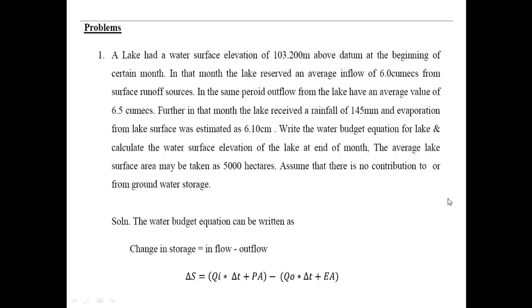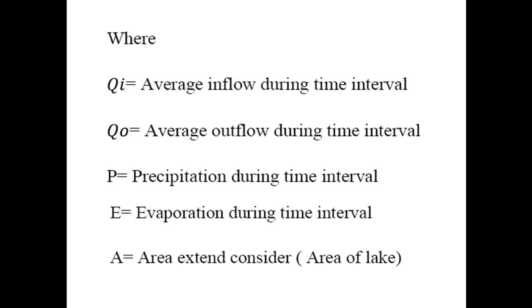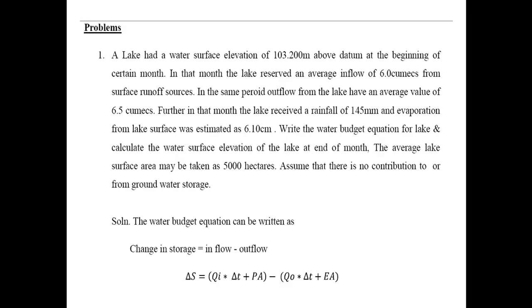We assume there is no contribution to or from groundwater storage. The water budget equation is written as: change in storage equals inflow minus outflow, which is delta S equals qi times delta t plus P times A, minus q0 times delta t plus E times A. Here qi is the average inflow, q0 is the average outflow, P is the precipitation, E is the evaporation, and A is the area of the lake.